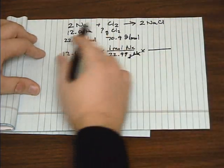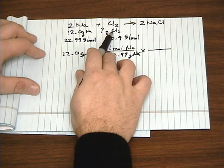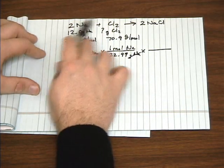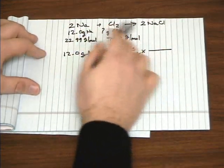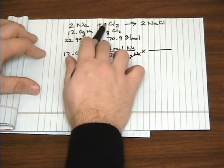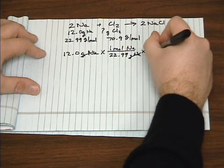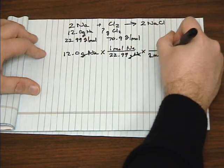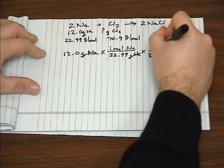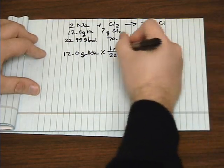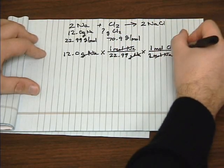And to go from moles of what was given to moles of the other chemical, we use a mole ratio that we get from the balanced chemical equation. So in this case, it's two sodiums for every one chlorine. So it's two moles of sodium for one mole of chlorine. If we write it like that, the unwanted unit drops out.